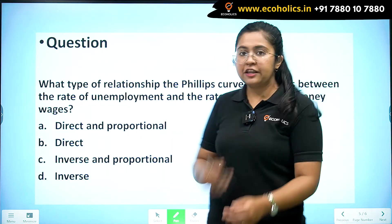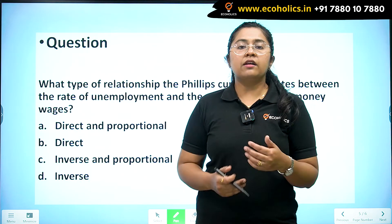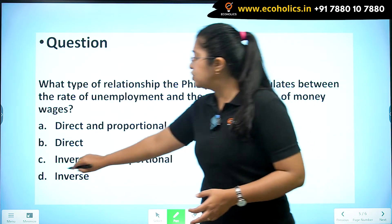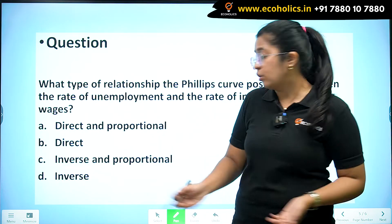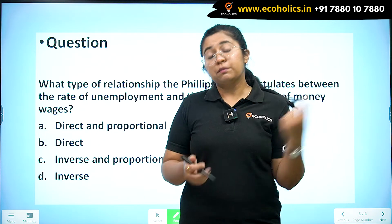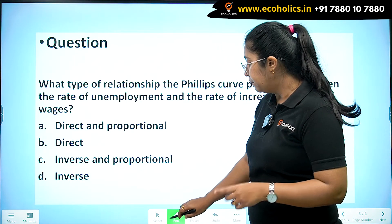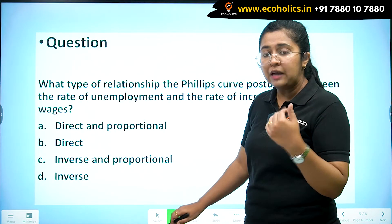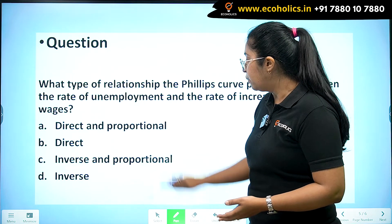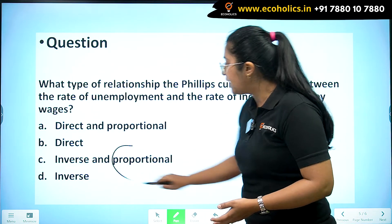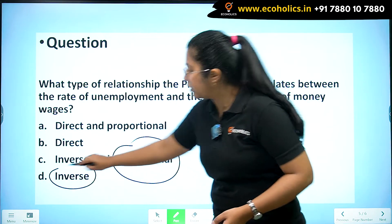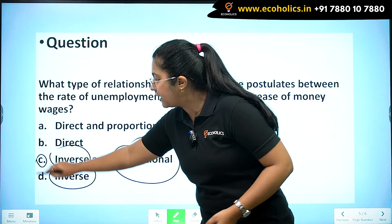The terminology 'proportional' used in the options could definitely confuse anybody. If you're initially learning macroeconomics, you might think the relationship is inverse but also possibly proportional. But before coming to your conclusion, you must know what proportional actually means. We know the relationship is inverse, so the answer is between options C and D.